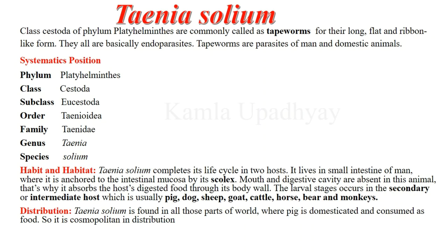If we see the habit and habitat of this animal, we find that it lives in two hosts, meaning its life cycle is completed within two hosts, so the life cycle is digenetic. Man is the definitive host of this worm and it lives inside its alimentary canal, anchoring with its scolex. Its secondary host may be pig, dog, sheep, goat, or cattle — all domesticated animals. The distribution of this animal is cosmopolitan, found wherever these domesticated animals are farmed.